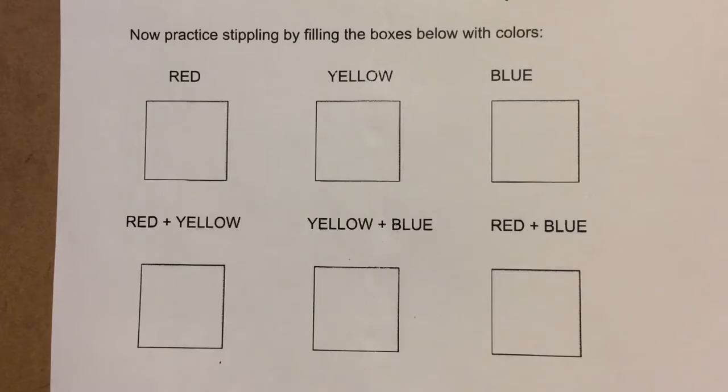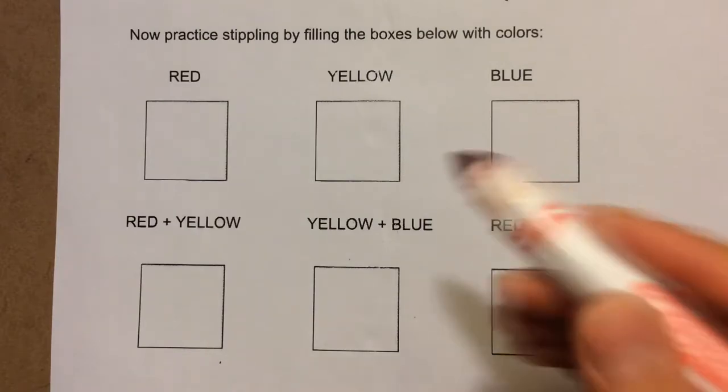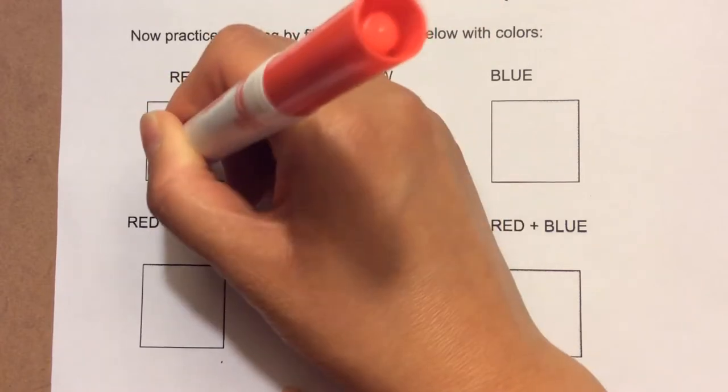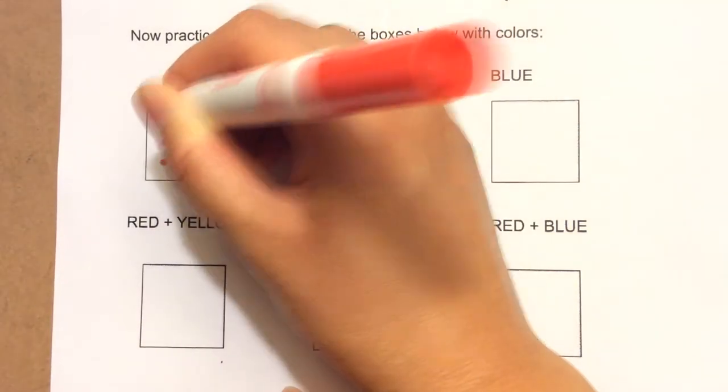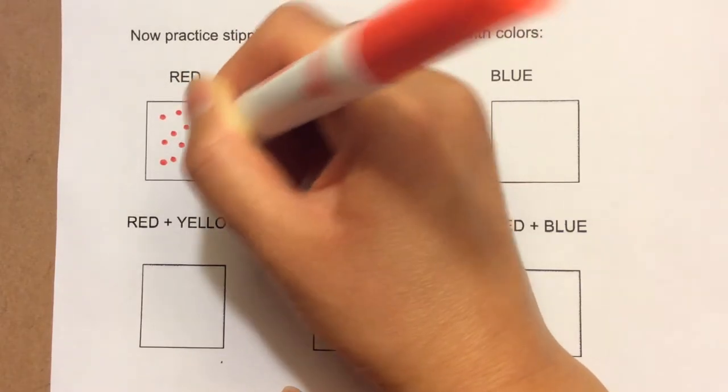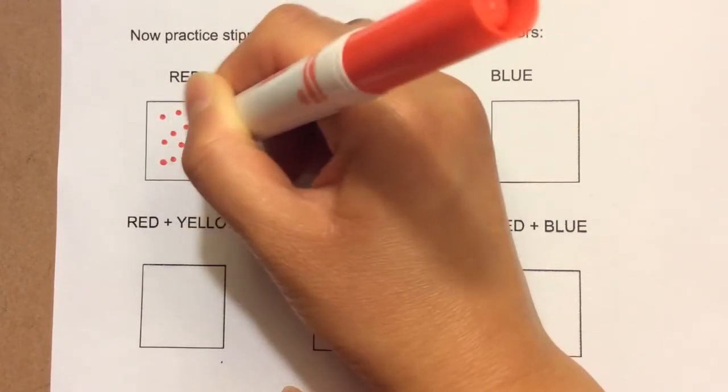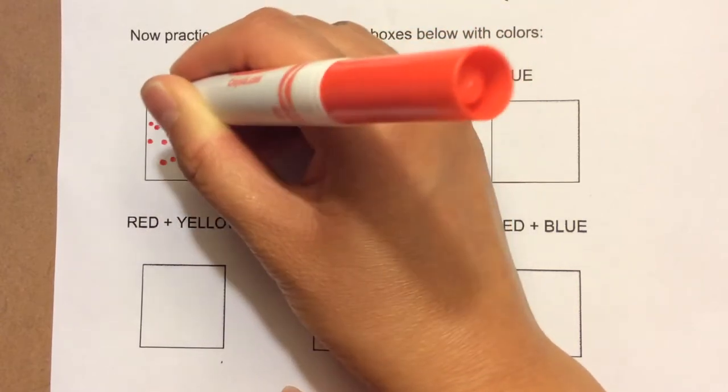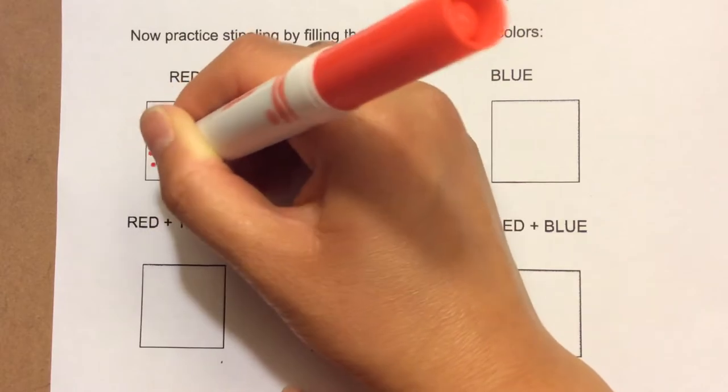Now let's practice stippling with color. I'm going to go ahead and shade the red one with you. Using the same method I used for shading the cylinder. This time I'm not too worried about light and shadow. I just want to color this box red. But the way I'm coloring it is with the stippling technique.